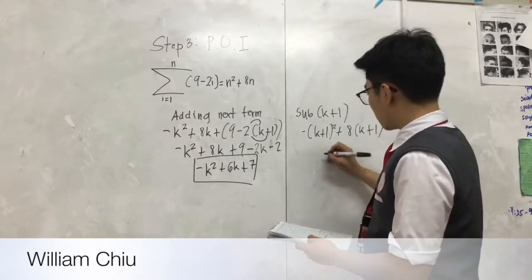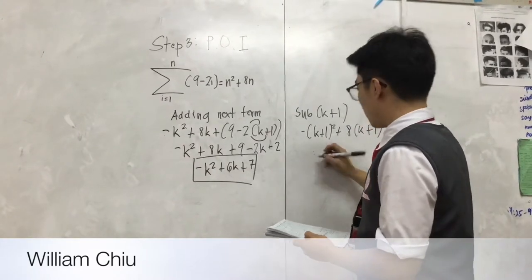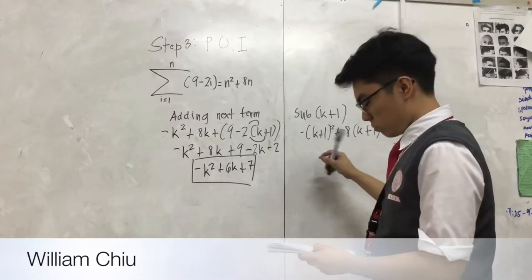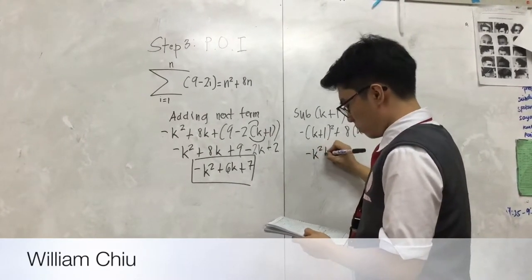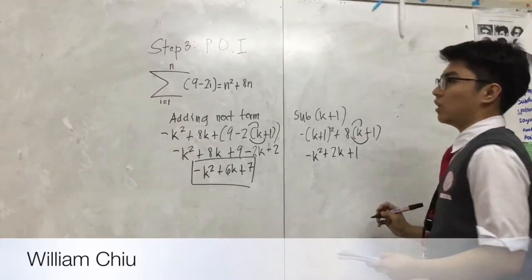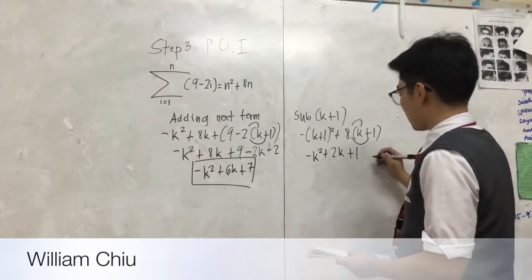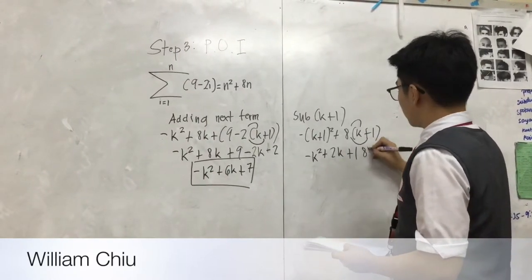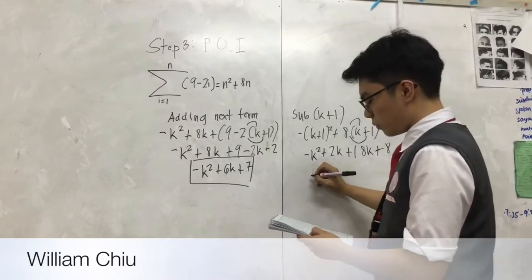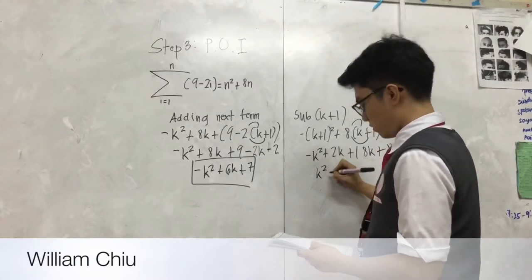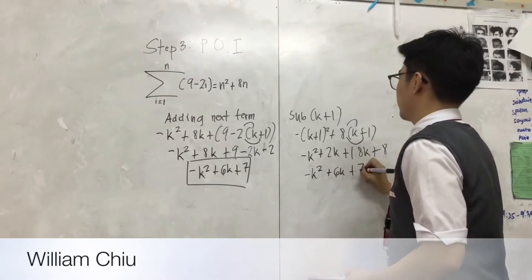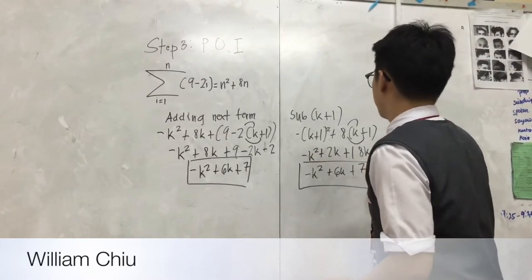We will use the binomial expansion. The answer will be negative k squared plus 2k plus 1, then 8k plus 8. To simplify this one, the answer would be negative k squared plus 6k plus 7, and we are all right.